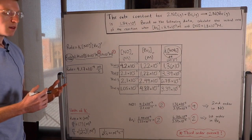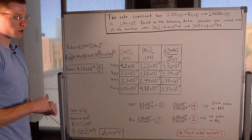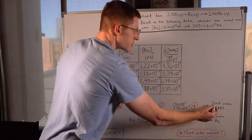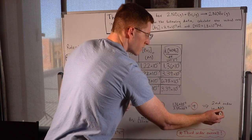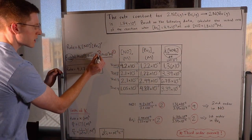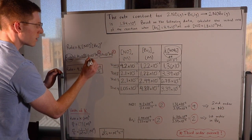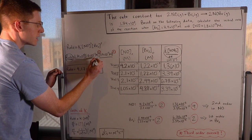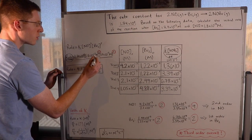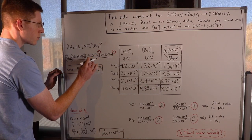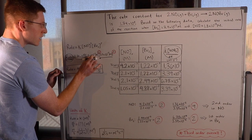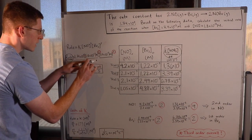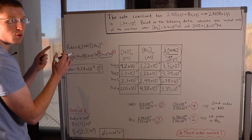From that we can conclude that this overall reaction is second order in NO. In other words, the exponent on NO's concentration is going to be a 2, because when we double the concentration it gets squared, making the rate go up by a factor of four.